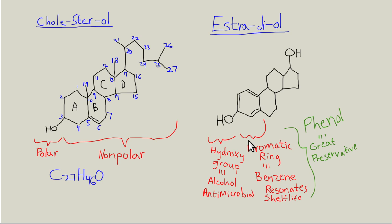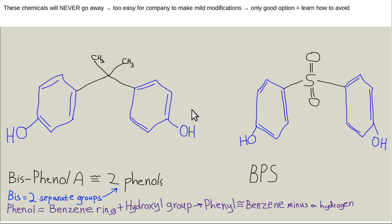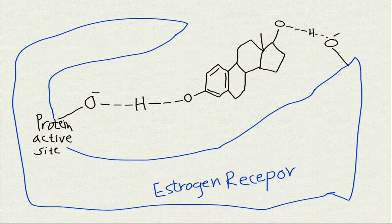A benzene ring with a hydroxyl group together is called a phenol — it is like a super preservative found in tons of personal care products and all the plastics. Here is bisphenol A, the most famous estrogenic chemical used for making plastics — you can see a phenol group on each side. When people realized BPA had very strong estrogenic activity and was getting into people's blood, urine, and fat cells, there was a push to ban it. The company just substitutes a sulfur or something else in the center — it is still estrogenic. All you can do is learn to recognize and avoid these chemicals.